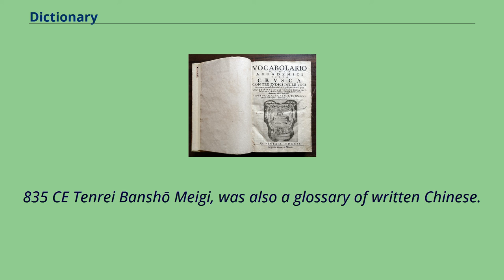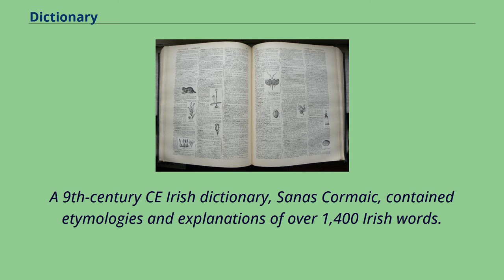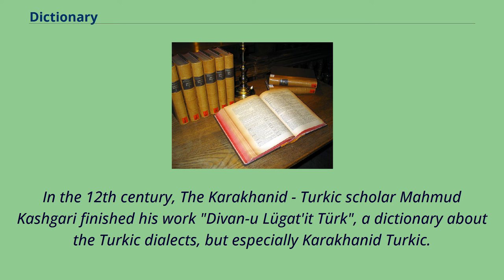In Frahang i Pahlawik, Aramaic heterograms are listed together with their translation in the Middle Persian language and phonetic transcription in the Pazand alphabet. A 9th-century CE Irish dictionary, Sanas Cormaic, contained etymologies and explanations of over 1,400 Irish words.